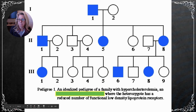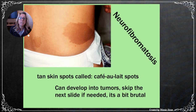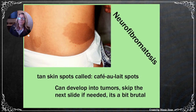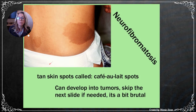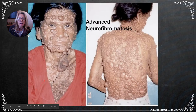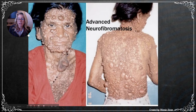Neurofibromatosis is an autosomal dominant disorder characterized by tan discoloring patches. If a friend has one, one of their parents has it as well. These patches are often removed because in the sun they can become tumorous, developing into visible tumors.